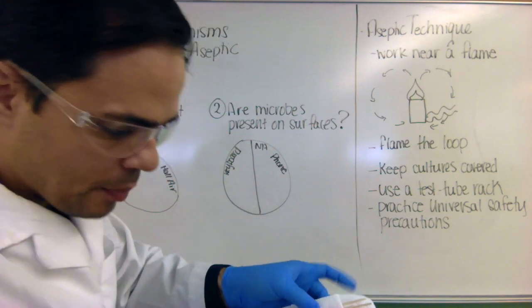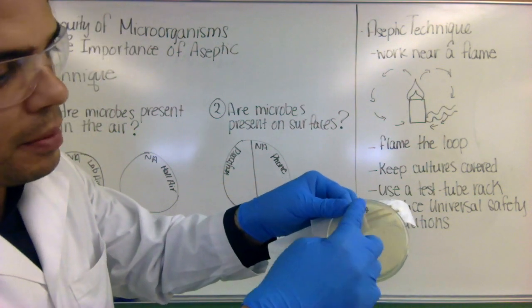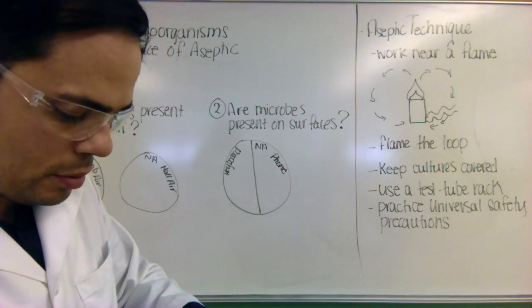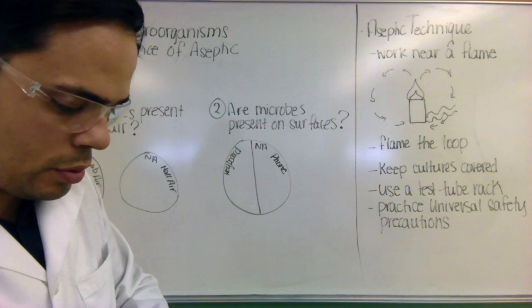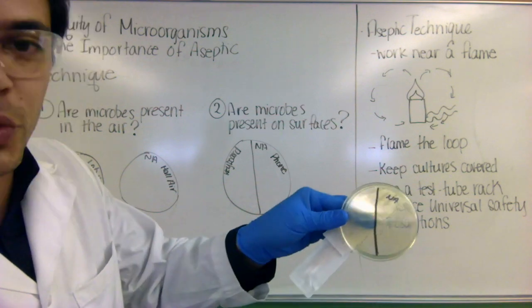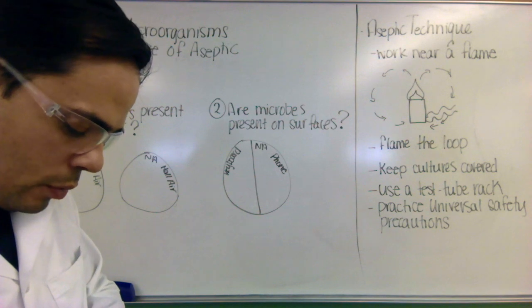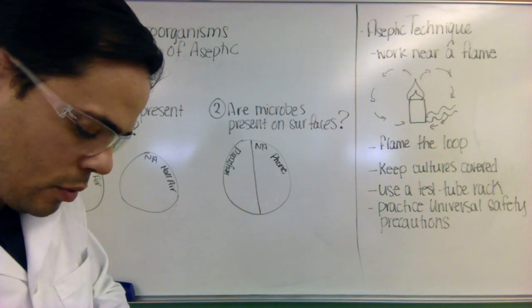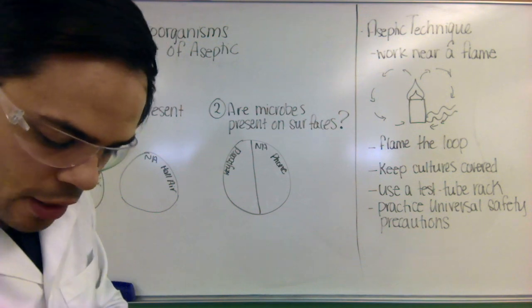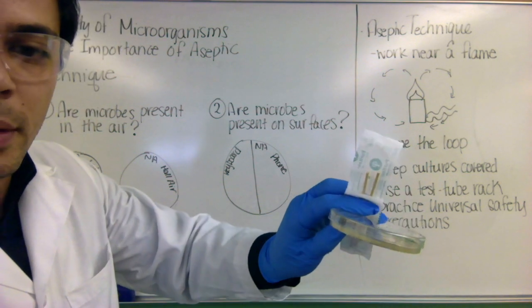And what I can do is I can take my plate and I can draw with a Sharpie a line down the middle there. So I'm going to draw a line down the middle, like so. And I'm going to label it. One side's going to say keyboard and one's going to say phone. You also want to put the date on there as well as your initials. And always label the bottom part, not the top part.